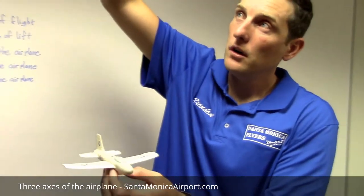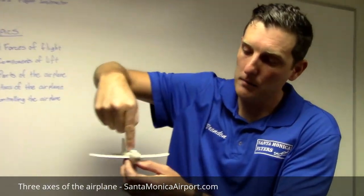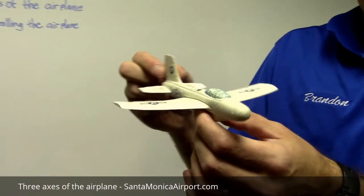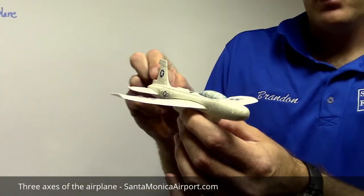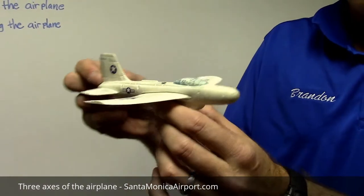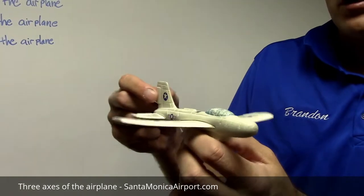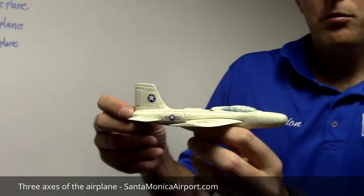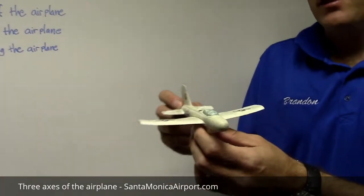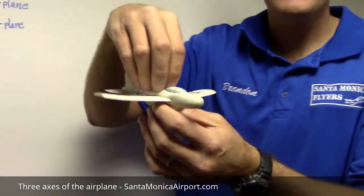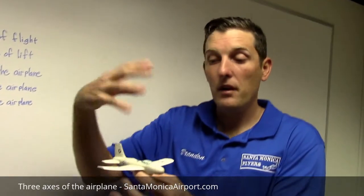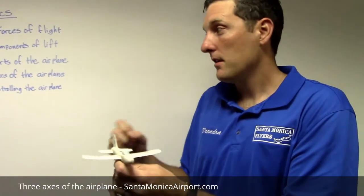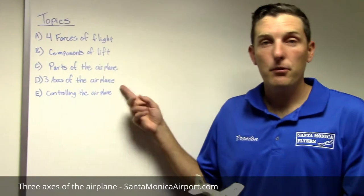There's another axis: draw a line from the top of the plane out the belly — that's the vertical axis. Pushing the rudder pedals on the floor manipulates the rudder, causing the plane to yaw right or left. Push the right rudder pedal, the nose pulls right; push the left rudder pedal, the nose pulls left. Where all three axes meet, we call that the center of gravity, which becomes very important later in training when you learn about weight and balance.